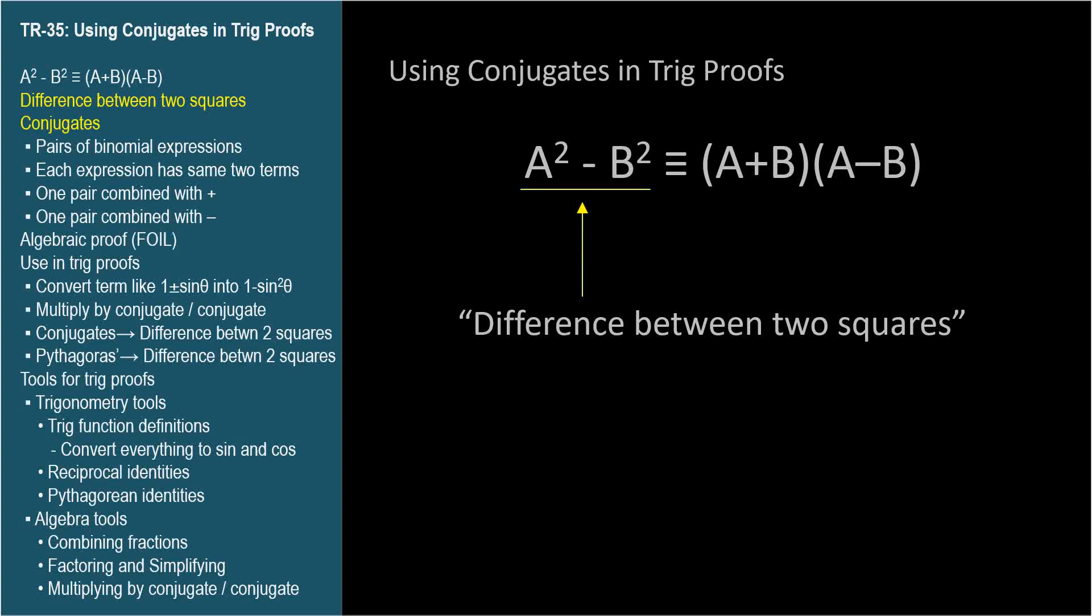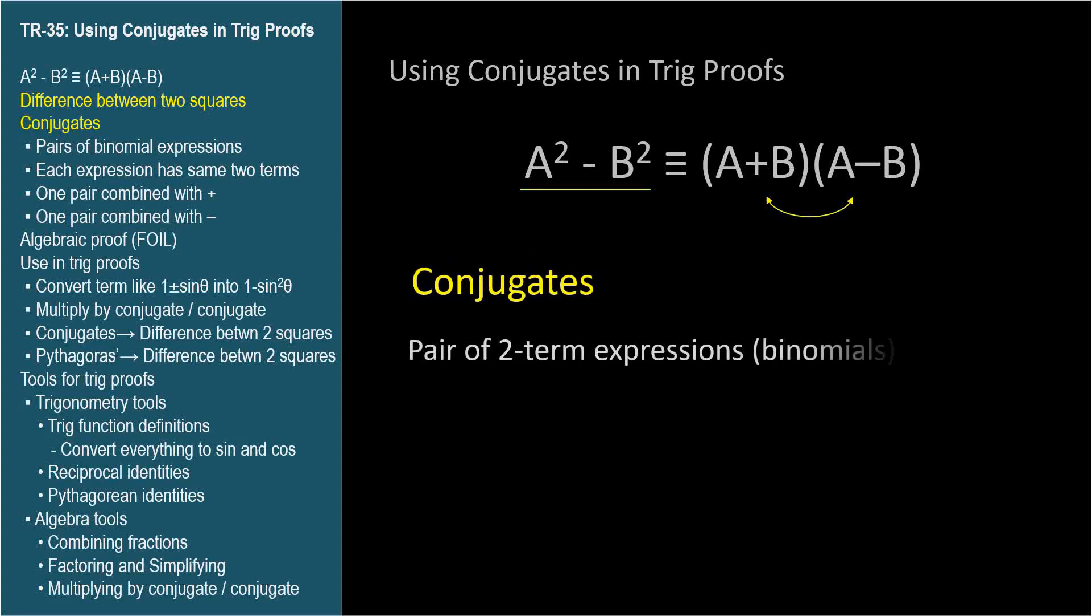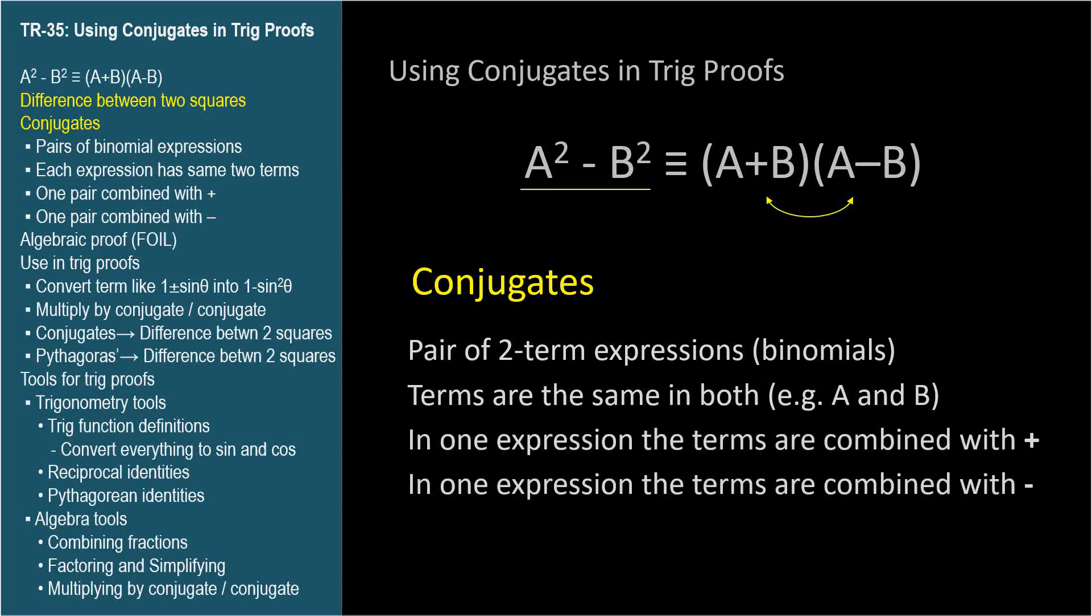Let's look at the right-hand side. The expressions a plus b and a minus b are conjugates of each other. In math, conjugates are pairs of binomial expressions, each with the same two terms. In this case, a and b. In one, they're combined with the plus sign, and in the other, they're combined with the minus sign. a plus b is the conjugate of a minus b, and vice versa.